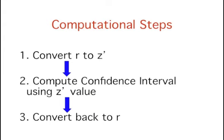There are three steps in computing a confidence interval for rho. First, we convert our R value from our sample to Z'. Second, we compute a confidence interval using values from the Z' transformation. Finally, we convert the confidence interval back to R.